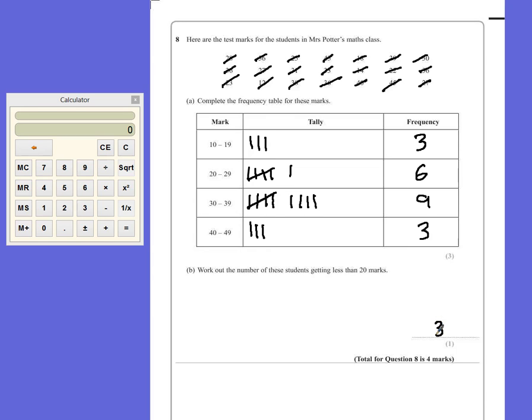It's a very easy mark if you've completed the table correctly. If you made a mistake here, as long as you read off the number you had on the table, that would still get you the mark.